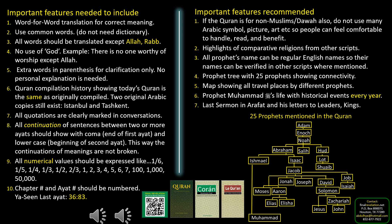Quran compilation history should be added. Two original Qurans still exist — one is in Istanbul, Turkey, and one in Tashkent, Uzbekistan. All quotations should be marked clearly, and continuations of quotations should also be clearly marked. All numbers should be numerically addressed so that people can see the numbers, and all chapter numbers and Ayat numbers should be clearly defined.